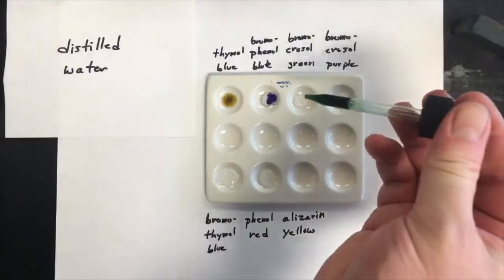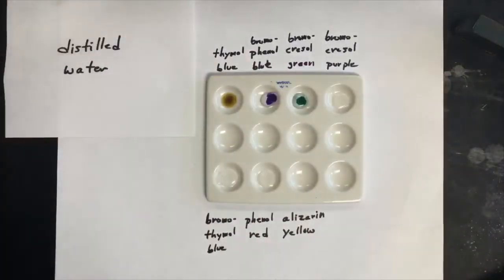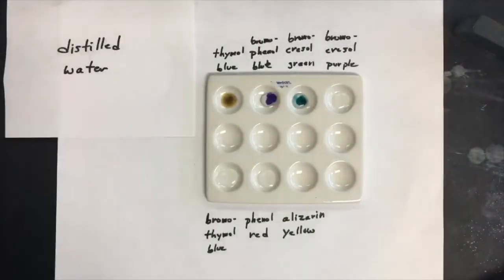Bromocresol green. It's also sometimes it's called bromocresol green. These dyes, they use different names. Sometimes they have the O in those cresols and sometimes they don't. This is bromocresol purple.